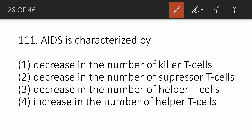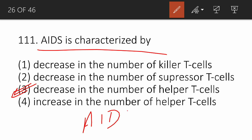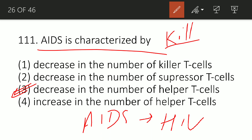Question 111: AIDS is characterized by which of the following? Option A: decrease in killer T cells, B: decrease in suppressor T cells, C: decrease in helper T cells, or D: increase in helper T cells. The correct option is C — decrease in the number of helper T cells. AIDS is caused by HIV. When HIV infects and targets helper T cells, it replicates inside them and eventually kills them, causing a decrease in helper T cell count. This leads to multiple infections in the affected person.